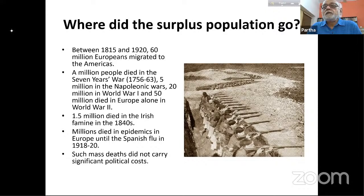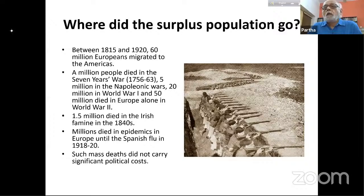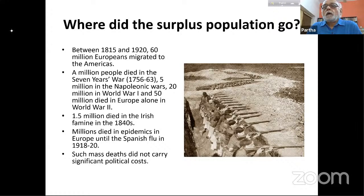A million people died in the Seven Years War in the middle of the 18th century. Five million died in the Napoleonic Wars in the early 19th century. 20 million died in World War I, and 50 million died in Europe alone in World War II. Most of those who died would have been among poorer people — even with conscription, the bulk of deaths came from the poor.